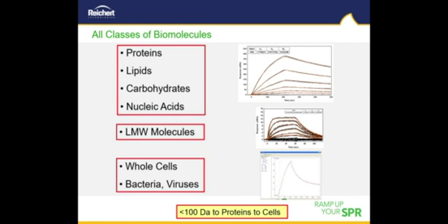Reichert's SPR systems can investigate interactions between and within all classes of biomolecules, including proteins, nucleic acids, carbohydrates, and lipids. In addition, the systems have the sensitivity to probe small molecule interactions with these biomolecules. Reichert systems can also be used to study whole cell interactions, such as antibodies binding to cells or living bacteria.